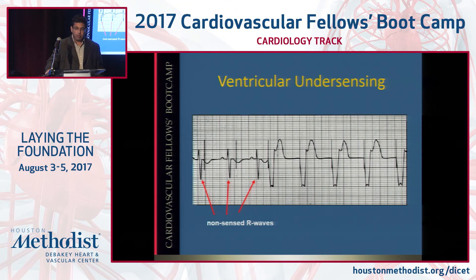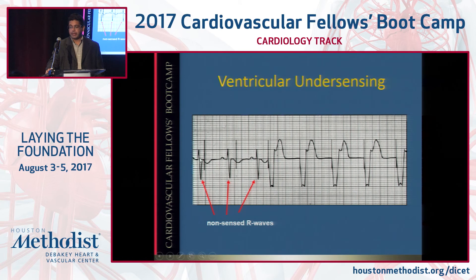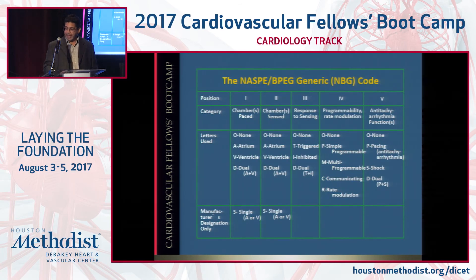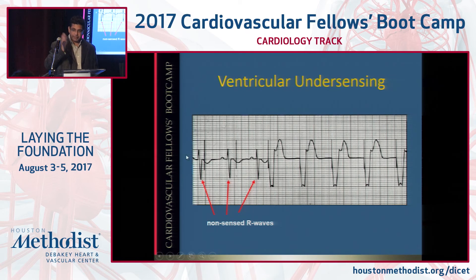Under-sensing leads to over-pacing — a failure to inhibit. Over-sensing means sensing signals that shouldn't be there, which inhibits pacing and results in too little pacing. Under-sensing means failing to sense signals that are present, usually leading to too much pacing. Here, there's a narrow QRS that should not be followed by a pacing spike, but is, because the pacemaker did not recognize the presence of that QRS. The sensitivity on the ventricular lead at a minimum probably needs to be adjusted. There's no problem with capture here — the pacing spikes that fire in the middle of ventricular systole simply don't capture because of the refractory period.